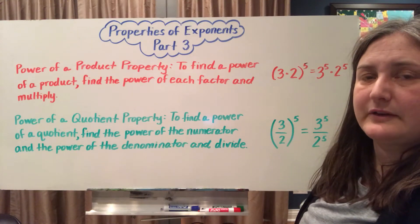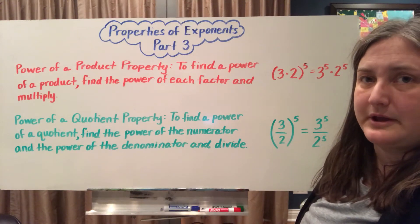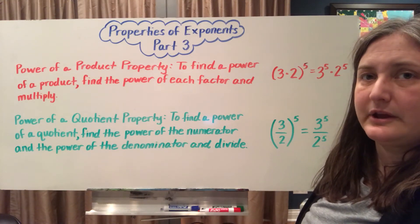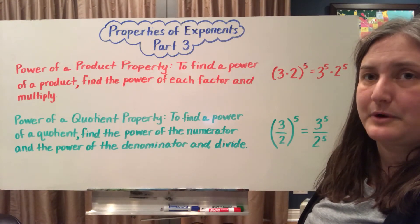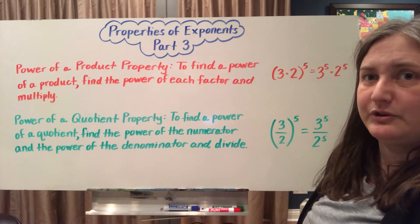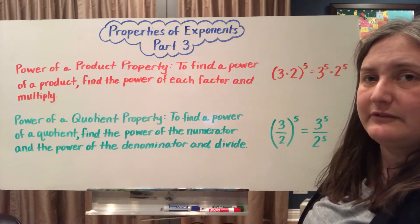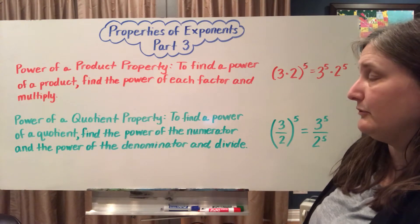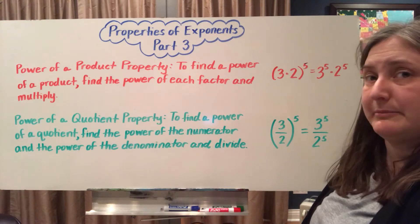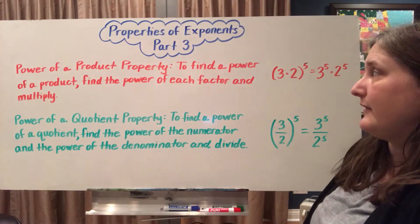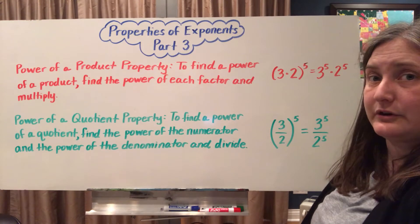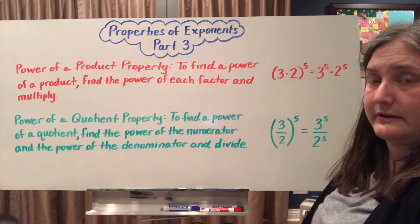This is Properties of Exponents, Part 3, and we're going to be looking at two different properties of exponents. The first is the power of a product property, which says if you're trying to find the power of a multiplication problem or product, you can find the power of each individual factor and then multiply to get your final answer.